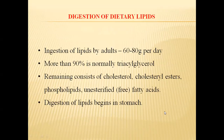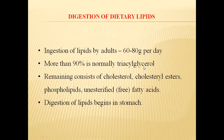Coming to the digestion of dietary lipids — usually adults consume 60 to 80 grams of lipids per day. More than 90% of these lipids are normally triacylglycerols. The remaining 10% consists of cholesterol or cholesterol esters, phospholipids, and unesterified fatty acids. Digestion of lipids begins in the stomach.